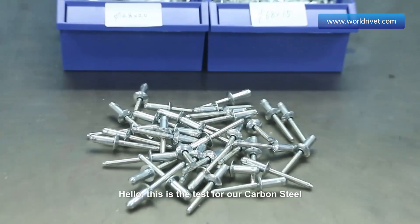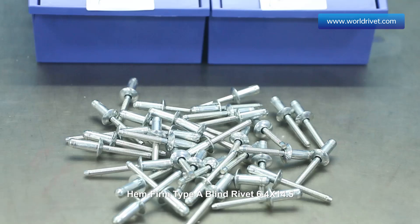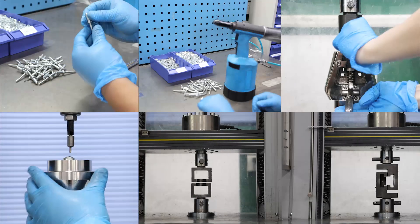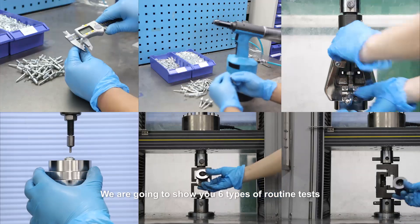Hello, this is the test for our carbon steel hem firm type A blind rivet 6.4 x 14.5. We are going to show you 6 types of routine tests.